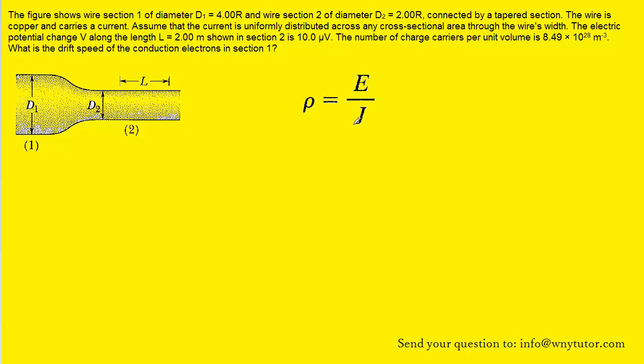Now what we're going to do is rearrange this equation and solve it for the current density. We can multiply both sides of the equation by the current density so that it cancels out on the right hand side, and then divide both sides by the resistivity value rho so that it cancels out on the left hand side. Then we can see that the current density is equal to the electric field divided by the resistivity.